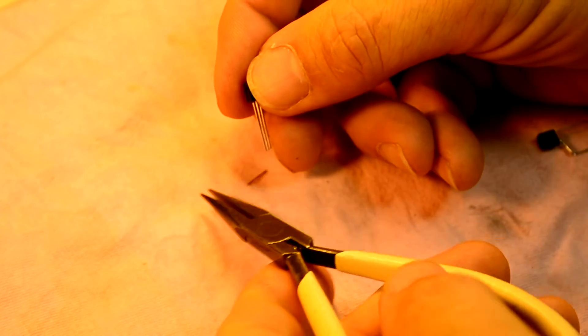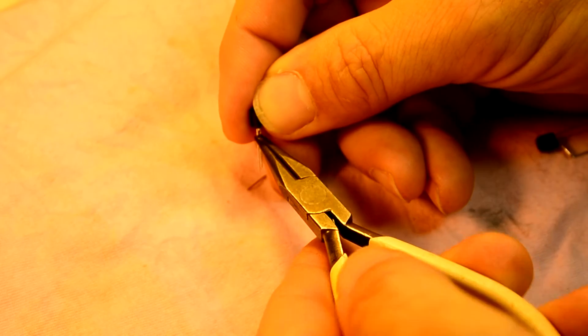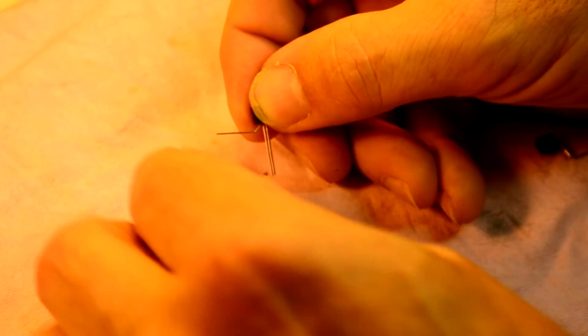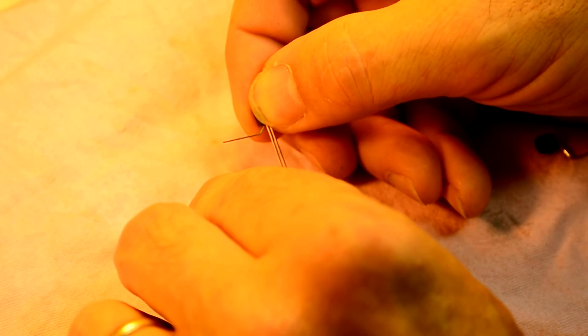We start by bending the outside leg up. Use wrist action. If you bend it too close to the plastic you can harm the transistor.